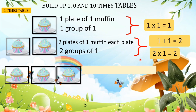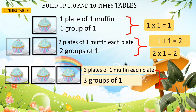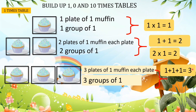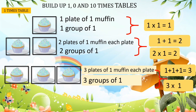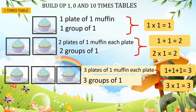Here we have three plates with one muffin in each plate — that means three groups of one. How many muffins altogether? We can use repeated addition: one plus one plus one equals three. Or we can say three times one equals three, because we have one muffin in each group. So the multiplication sentence is: three times one equals three.